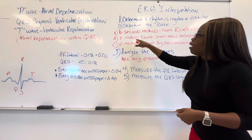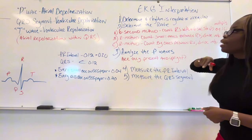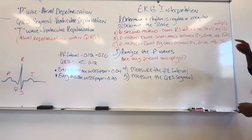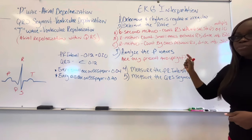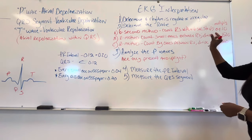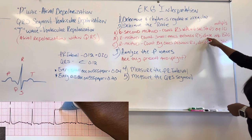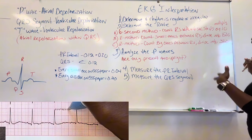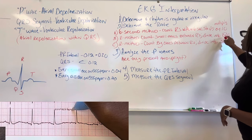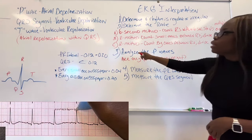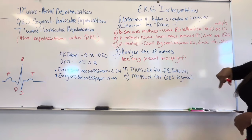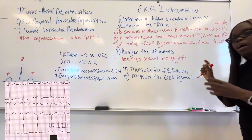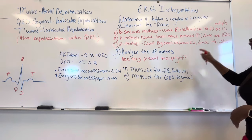So the next method is the R method. Now we have two different R methods. The R method, you want to count the small boxes between two R's and you're going to divide that number into 1500. Not by 1500, into 1500. So if you count the small boxes between those R's and you count 20 boxes, you're going to divide 1500 by 20. The next R method is the big boxes. You're going to count the big boxes and then you want to divide that number into 300. So if you get three boxes or four big boxes, you want to divide 300 by that number.